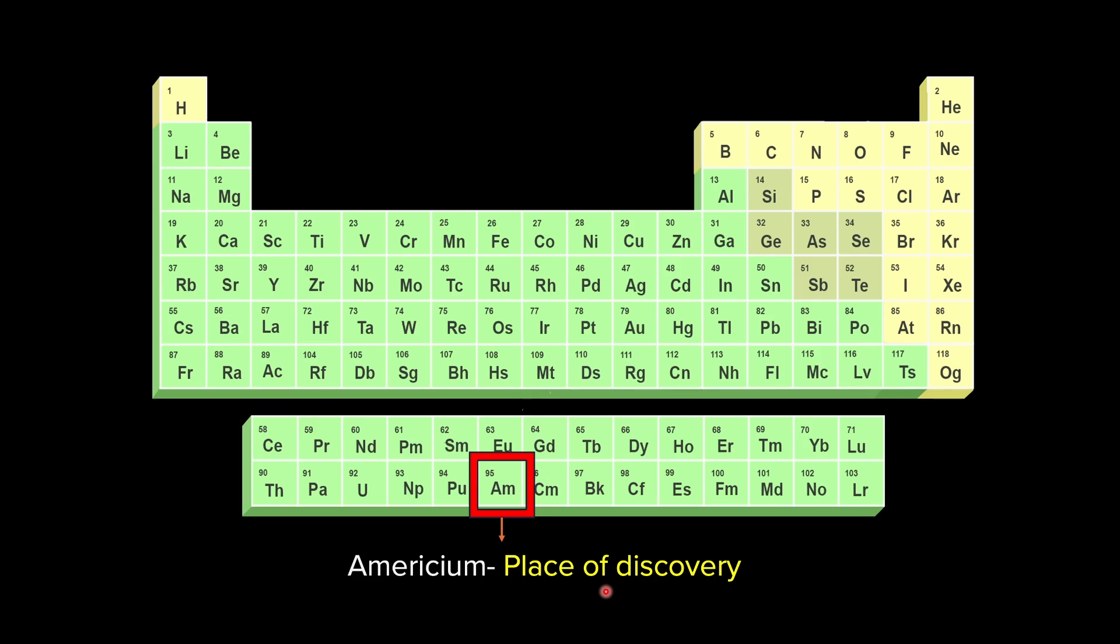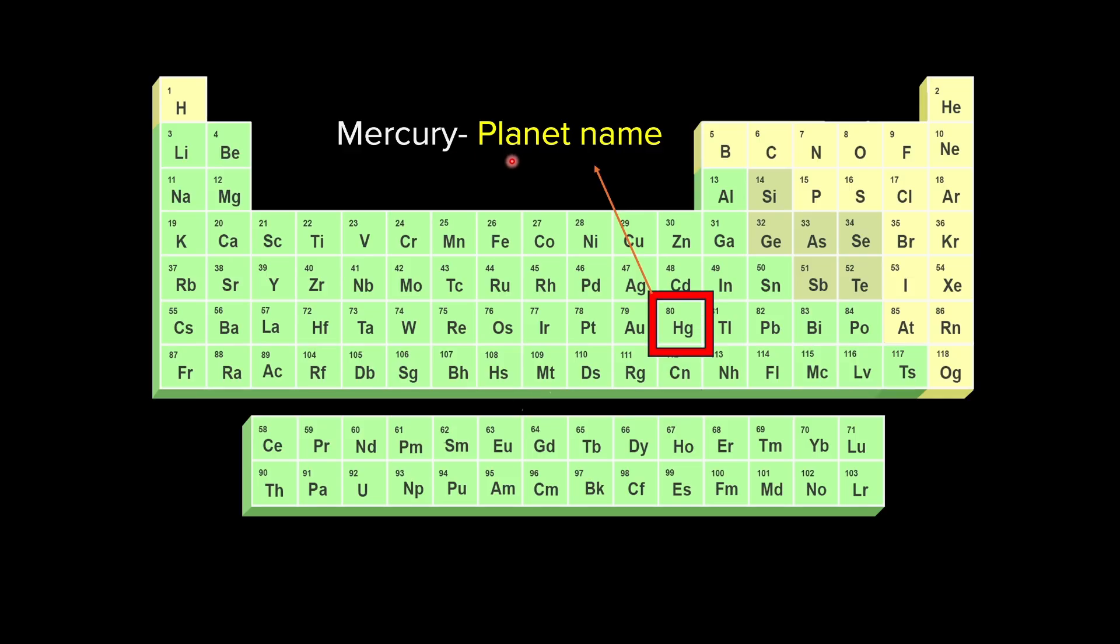Let's take a look at another element, say Mercury with atomic number 80. You can see that Mercury is the name of a planet. So Mercury element is getting the name from the name of a planet.